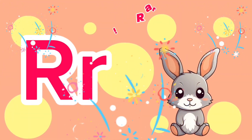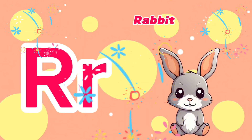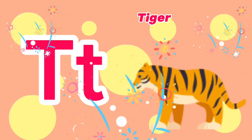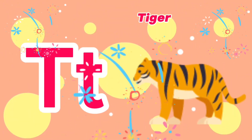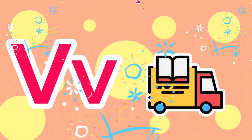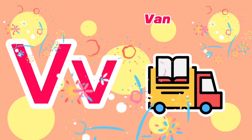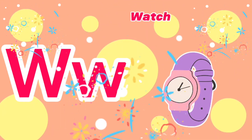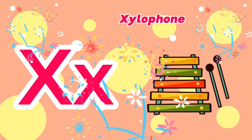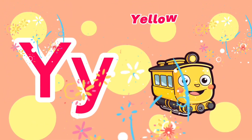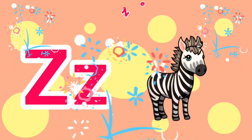R is for Rabbit. S is for Sun. T is for Tiger. U is for Umbrella. V is for Van. W is for Watch. X is for Xylophone. Y is for Yellow. Z is for Zebra.